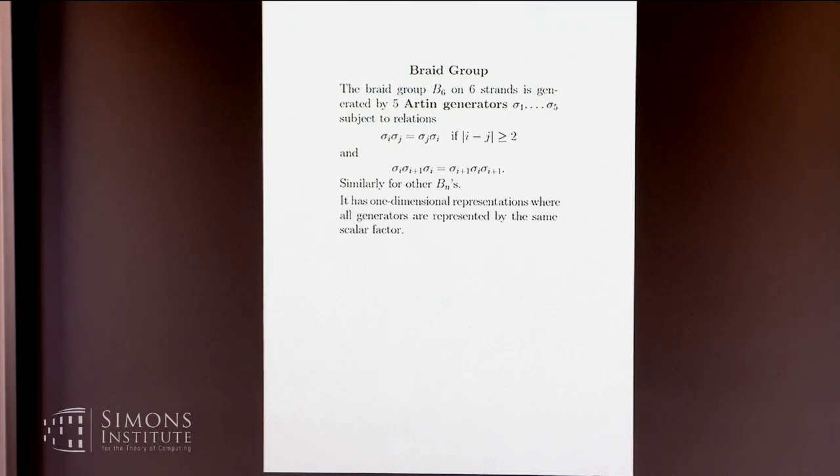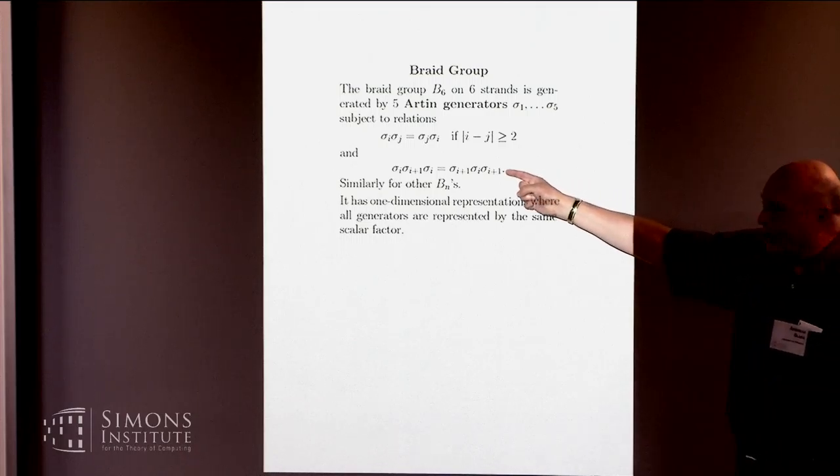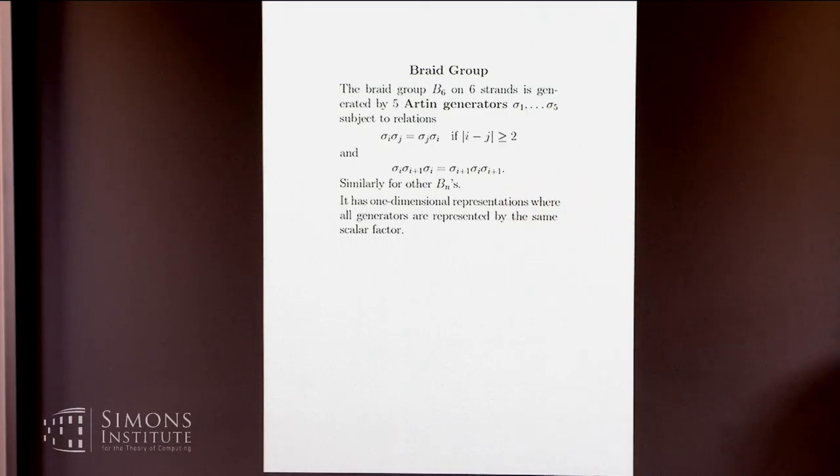Well, yeah, higher braid groups work just as well. Braid groups have some silly one-dimensional representations. One-dimensional means instead of using a matrix representation, a one-dimensional matrix is like a number. So you're representing each generator by a number. And when you do that, this relation forces you to represent all generators by the same number. So you're just doing some scalar factor. Uninteresting.